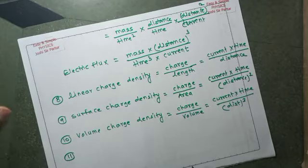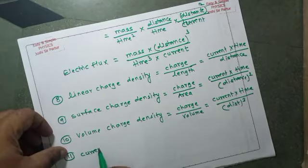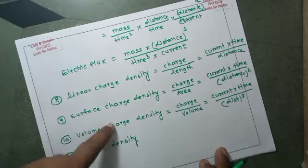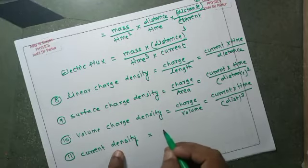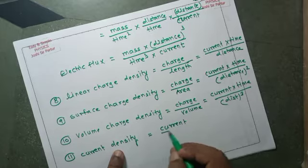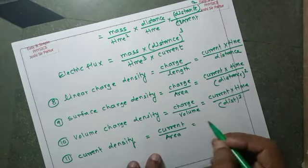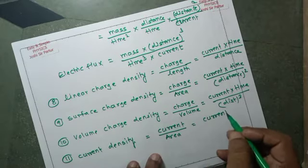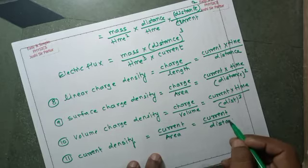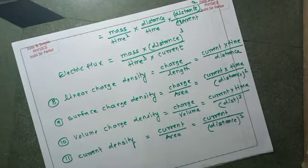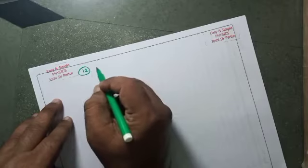Current density is the ratio of current per unit area, so its dimensional formula is current divided by distance squared.